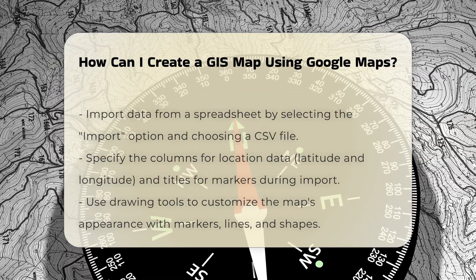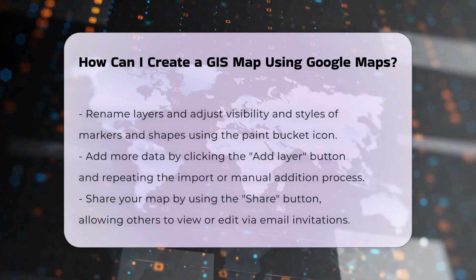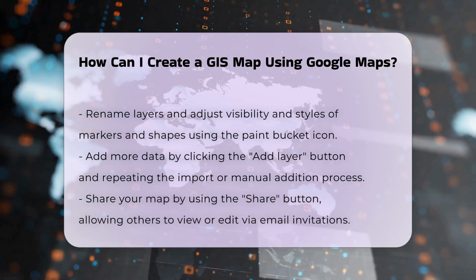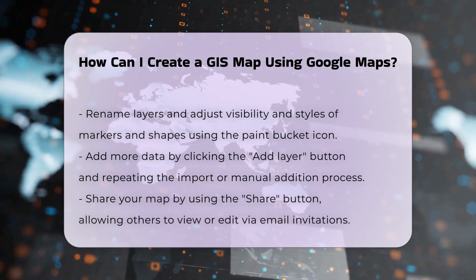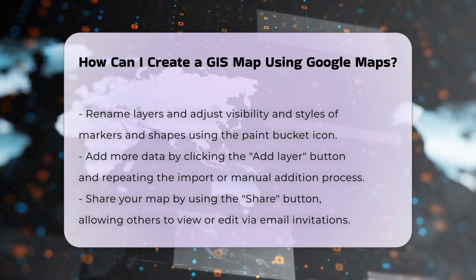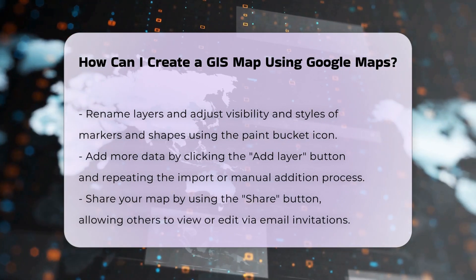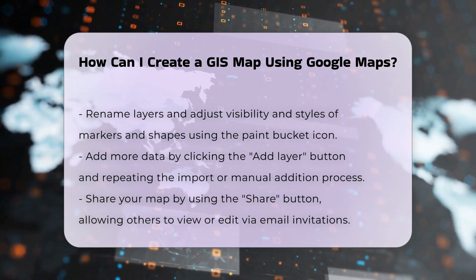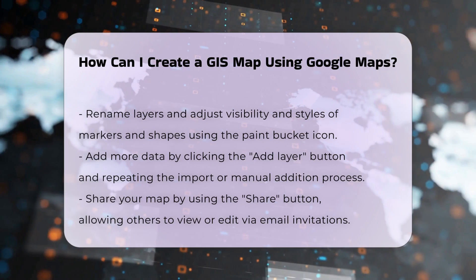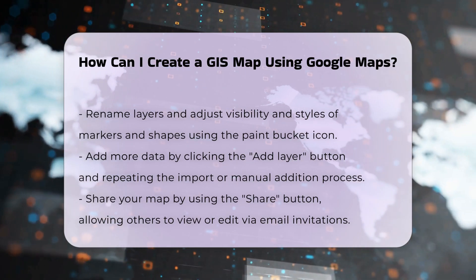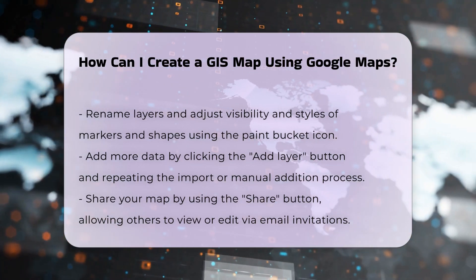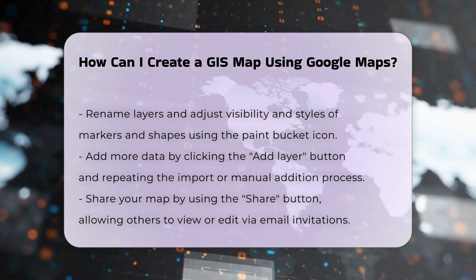Edit your map data. To edit your map data, you can rename layers, change the visibility of points, and adjust the styles of your markers and shapes. For example, you can change the color, line weight, and transparency of lines and shapes by using the paint bucket icon.